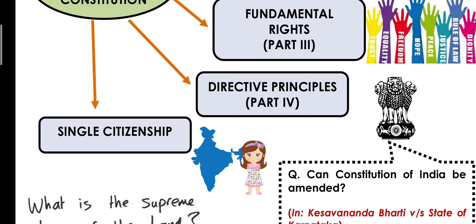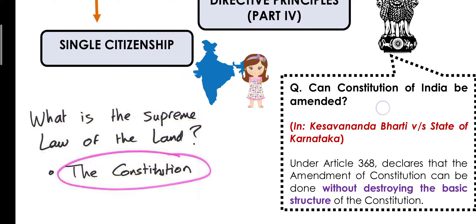India does not allow dual citizenship — it has a single citizenship concept. If you are a citizen of India, you cannot have any other citizenship of any other country in the world. Countries like America allow dual citizenship — you can be an American citizen and a citizen of another country simultaneously. But India does not allow that. If you really want to become an American citizen, you must renounce your Indian citizenship — cancel it, terminate it — and only then can you acquire citizenship of another country.